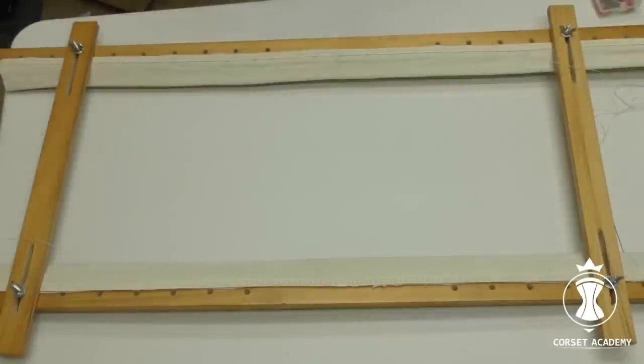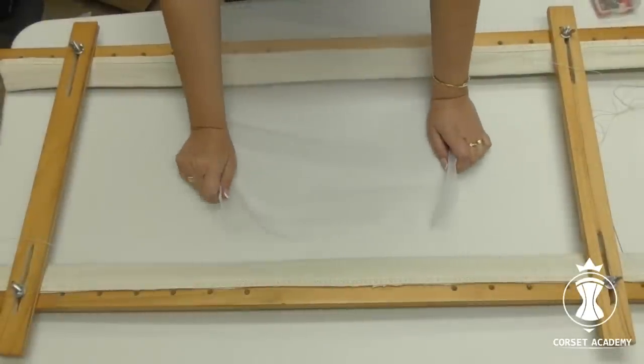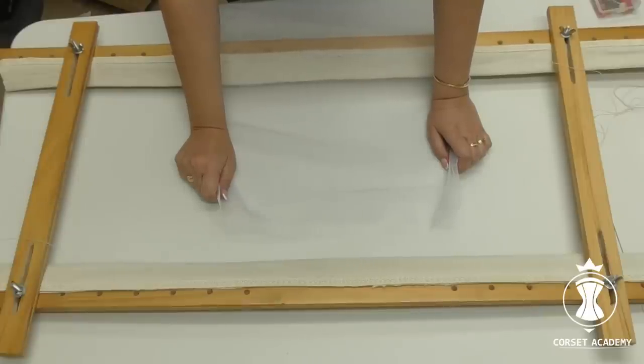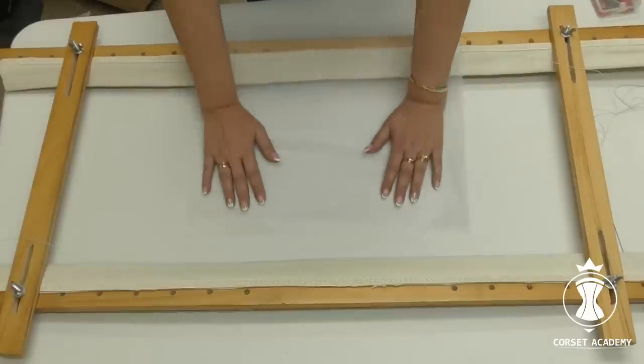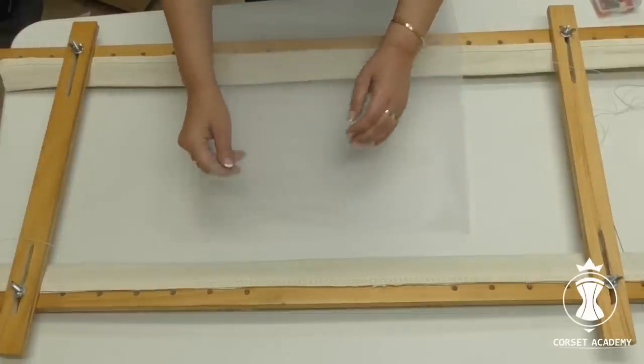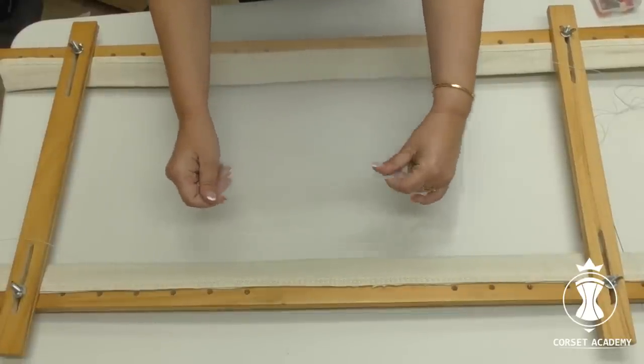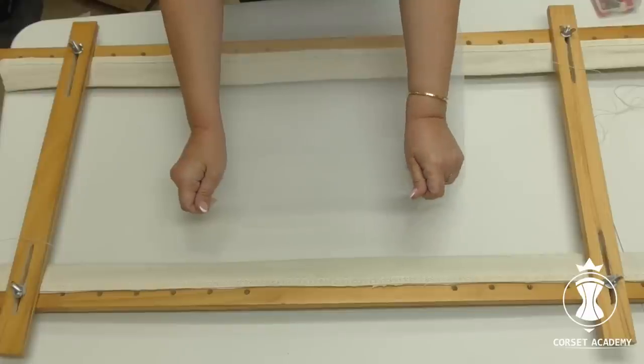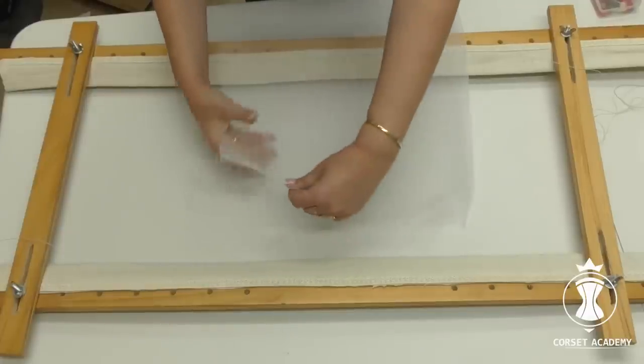There are not any difficulties to mount the fabric into the embroidery frame. However, we need to consider some peculiarities. The more elastic the mesh or any fabric is, the more difficult it is to mount and to embroider on it. In this course, I will not demonstrate the work with super elastic fabric. I will demonstrate the Dutch mesh mounting, which is not stretchable lengthwise and is stretchable crosswise.